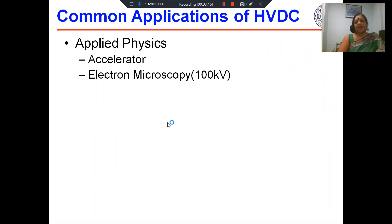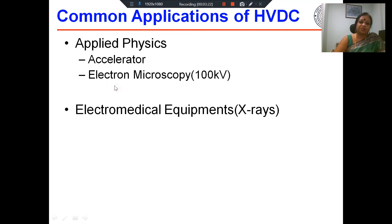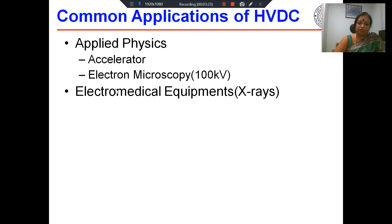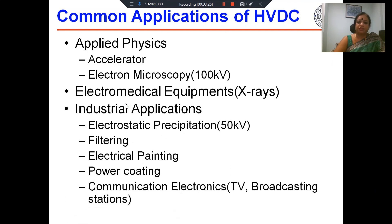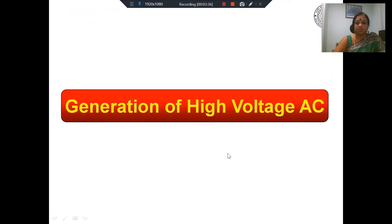Common applications of high voltage DC, apart from test circuits, include applied physics uses such as particle accelerators and electron microscopy, electro-medical equipment like X-rays, and industrial applications such as electrostatic precipitators, filters, electrical painting, powder coating, and communication electronics in TV broadcasting stations.